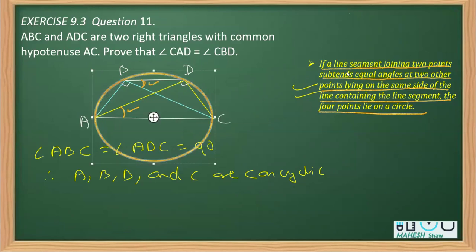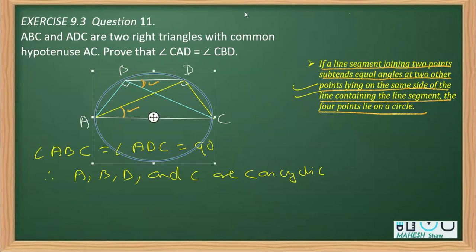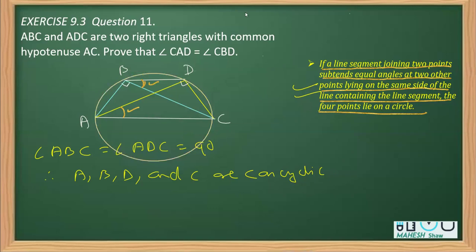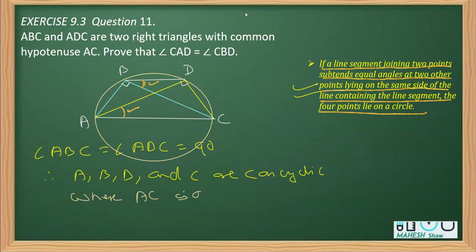Since these four points lie on a circle, we have a cyclic quadrilateral where AC is the diameter. AC is the diameter because of the angle in a semicircle property — the 90-degree angles confirm this.